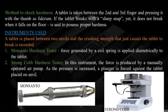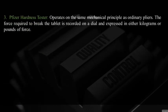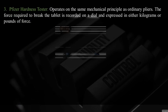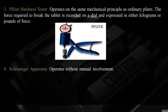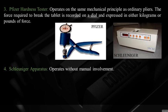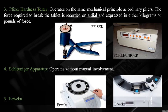The Stronof hardness tester applies force using a manually operated air pump; as pressure increases, a plunger is forced against the tablet on the anvil. The Pfizer hardness tester operates on the same mechanical principle as ordinary pliers, and the force required to break the tablet is recorded on a dial expressed in kilograms or pounds per force. The Challenger hardness tester operates without manual involvement — you press the on button, place the tablet between the plungers, and it displays the force required to break the tablet. Another instrument is the Arveka tester.